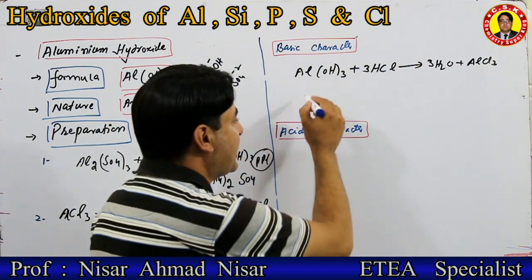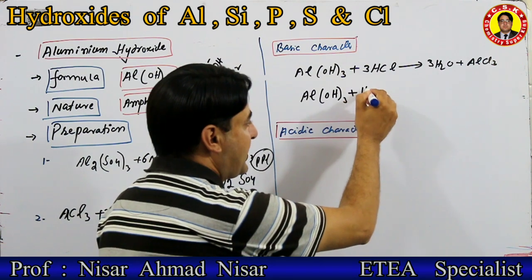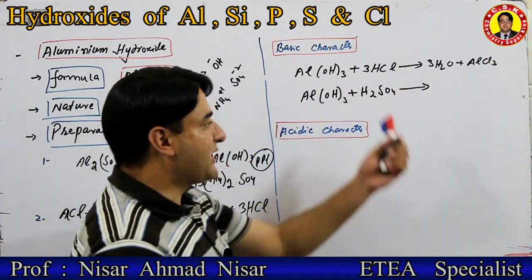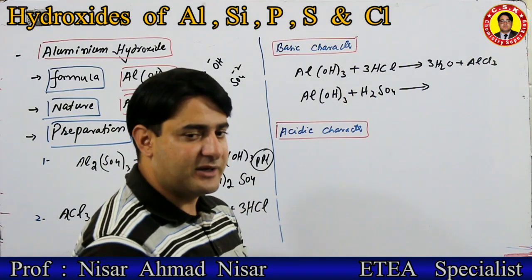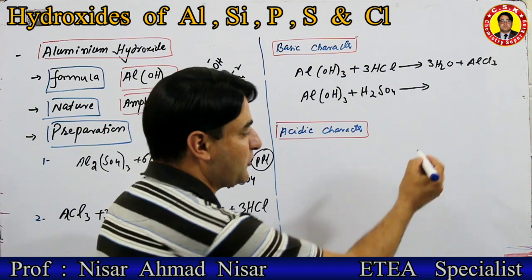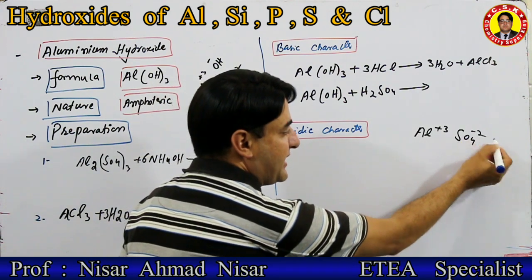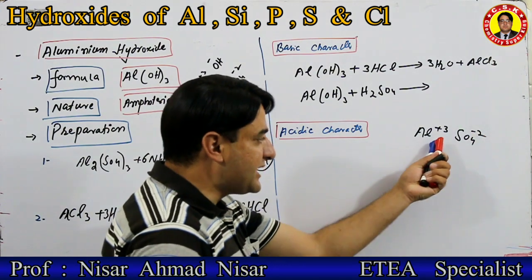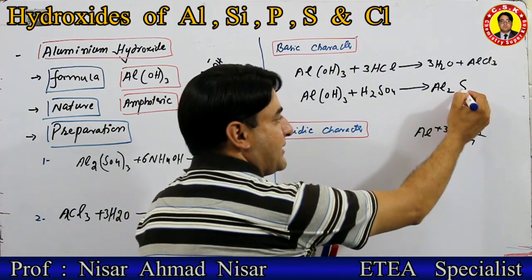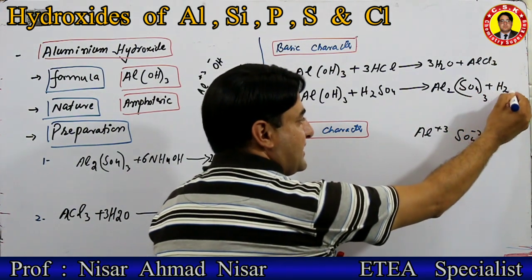اسی طرح اگر ہم aluminium hydroxide کو sulfuric acid کے ساتھ ملاتے ہیں — simple acid-base reaction ہوگا۔ Sulfuric acid کا hydrogen اس کے hydroxide سے ملے گا water بنائے گا۔ Aluminium اور sulfate ملیں گے — aluminium کی valency plus 3، sulfate کی valency minus 2 — تو Al₂(SO₄)₃ اور 3H₂O بن جائیں گے۔